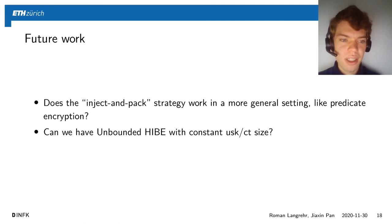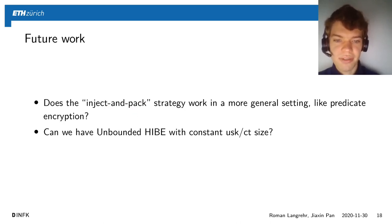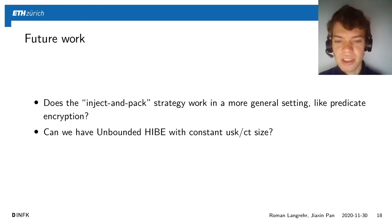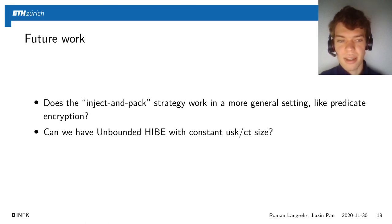Finally, here are two ideas for future work. The first is whether the inject-and-pack strategy we use — where 'inject' refers to the blinding terms that inject randomness into user secret keys, and 'pack' refers to the mechanism of moving this randomness around until it finally hides the master secret key — is helpful in a more general setting, for example for general predicate encryption schemes. The second is whether we can have an unbounded HIBE scheme with constant-size user secret keys and ciphertexts, since all current constructions suffer from user secret key and ciphertext sizes that grow with the length of the identities, which is the main obstacle for using HIBE with very large hierarchies. Thanks for your attention.